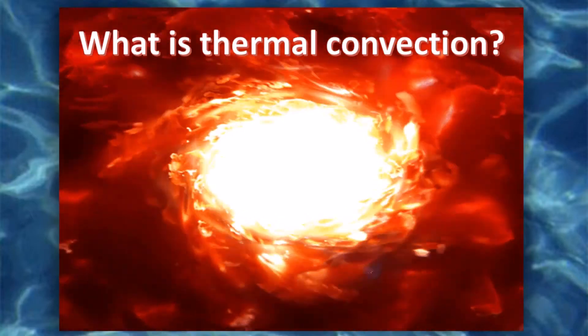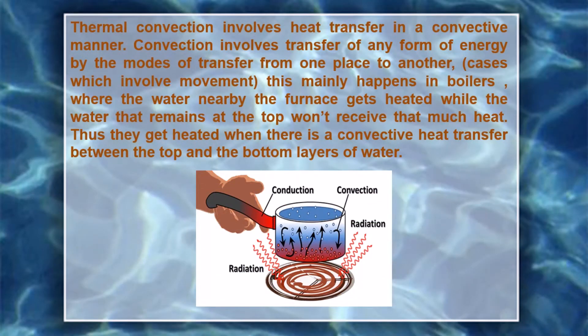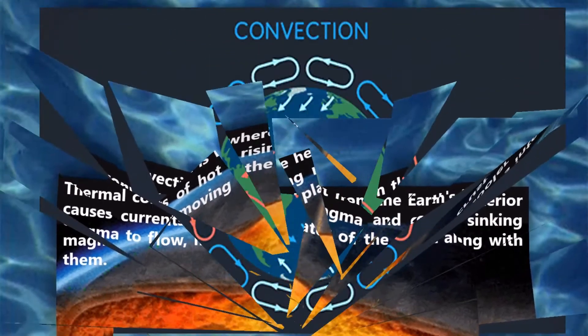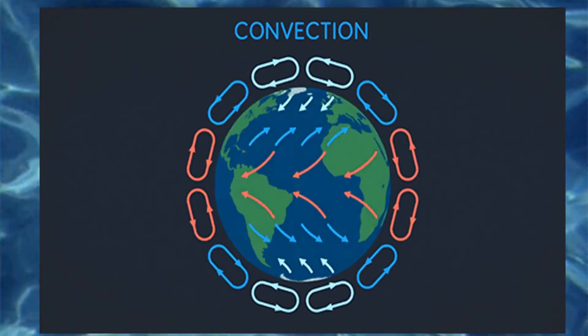What is thermal convection? Thermal convection involves heat transfer in a convective manner. Convection involves transfer of energy by the movement from one place to another. This mainly happens in boilers, where the water near the furnace gets heated while the water at the top receives less heat. Convection currents in the mantle are much slower than those in boiling water — the rock creeps only a few centimeters a year.